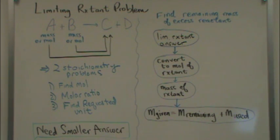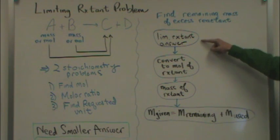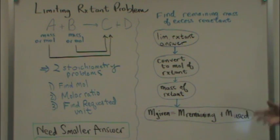Now, another common problem in a limiting reactant question is to find the remaining mass of the excess reactant. So, that's the one that's not the limiting reactant, but the other reactant. How do you do that? Well, first, you start with the limiting reactant answer. And by that, I mean, in our case, the C.